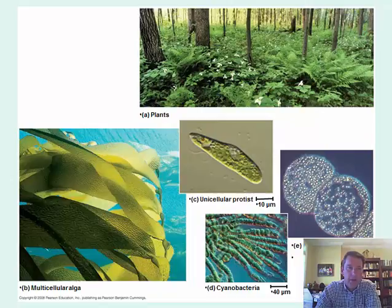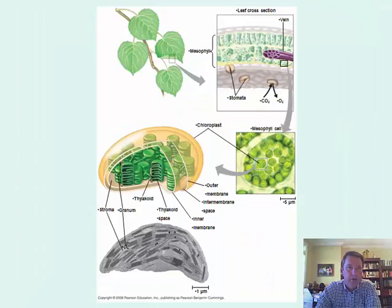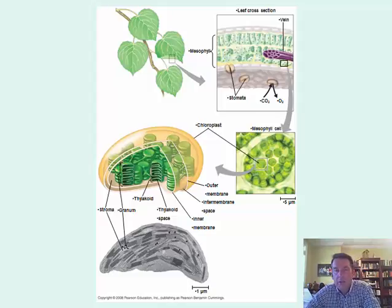Chloroplasts are found in the middle of the leaf in the mesophyll. So let's look at this diagram — it shows the location of these cells. Here we have a leaf and a cross section showing where most of the chloroplasts are located, right in the mesophyll. That actually means 'middle of leaf': 'meso' means middle, 'phyll' means leaf.